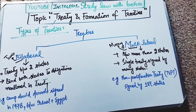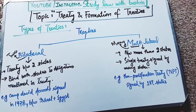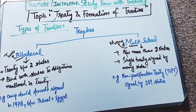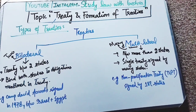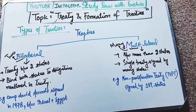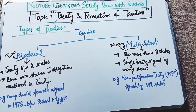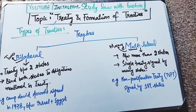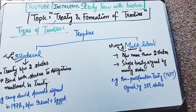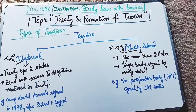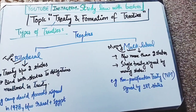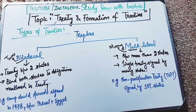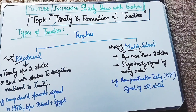For example, the Camp David Accords treaty is an example of a bilateral treaty that was signed between Israel and Egypt. The second type is multilateral treaty — 'multi' means many — so a treaty signed between more than two states is called a multilateral treaty. A single treaty signed by many states. An example is the Non-Proliferation Treaty (NPT), which was signed by 189 states.